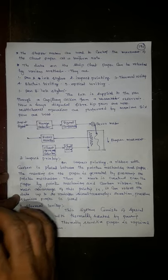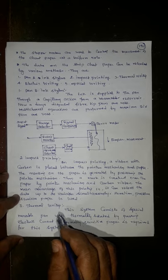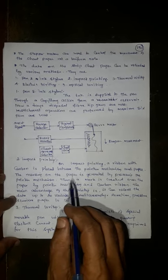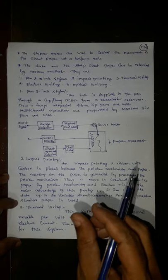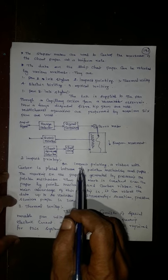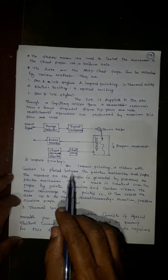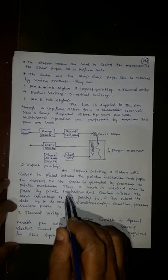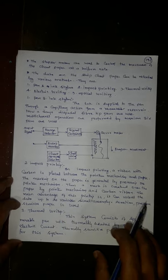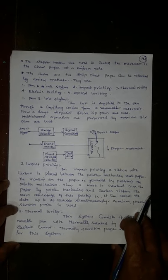Let me see the first one, pen and ink stylus. The ink is supplied to the pen through capillary action from a reservoir with a small tube and tank. Nowadays, the disposable fiber tip pens are used, replacing the reservoir and capillary tube. Multi-channel operation is also performed by using maximum 6 pens.